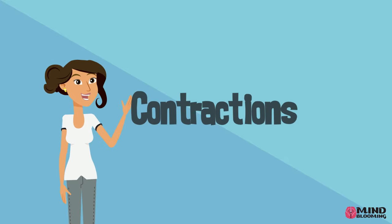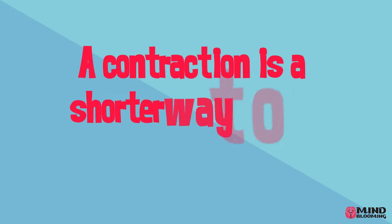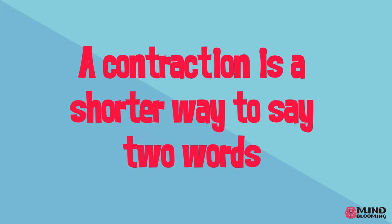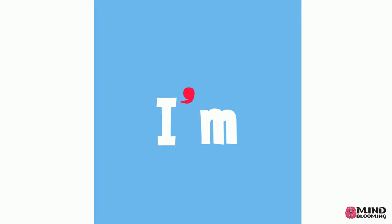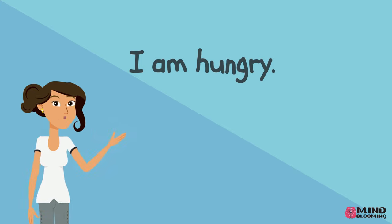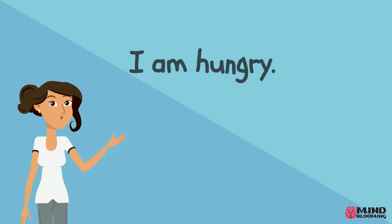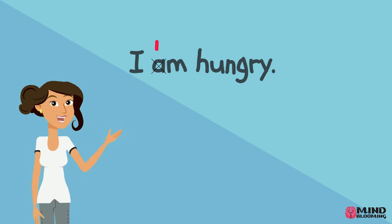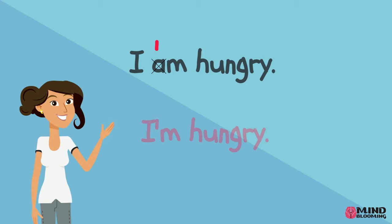Contractions. A contraction is a shorter way to say two words. When two words are put together, either one or two letters will disappear and an apostrophe will appear in its place. So I can say I am hungry, but I can also combine I and am together by taking away the A and adding an apostrophe in its place. So then I can say I'm hungry.